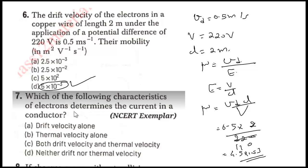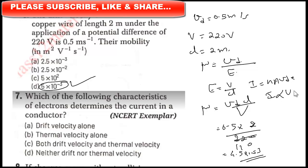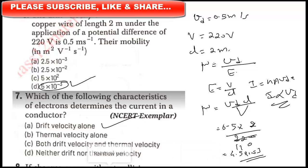Next question: which of the following characteristics of electrons determines the current in a conductor — drift velocity alone, thermal velocity alone, both, or neither? Current in a conductor is given by i = nAvde, so it depends on drift velocity. Therefore the answer is drift velocity alone.